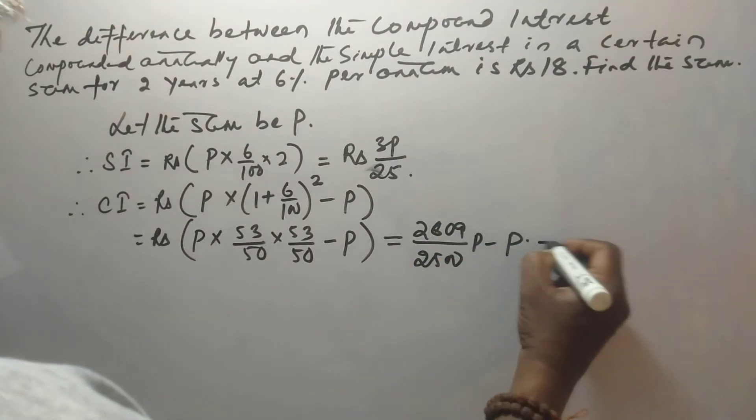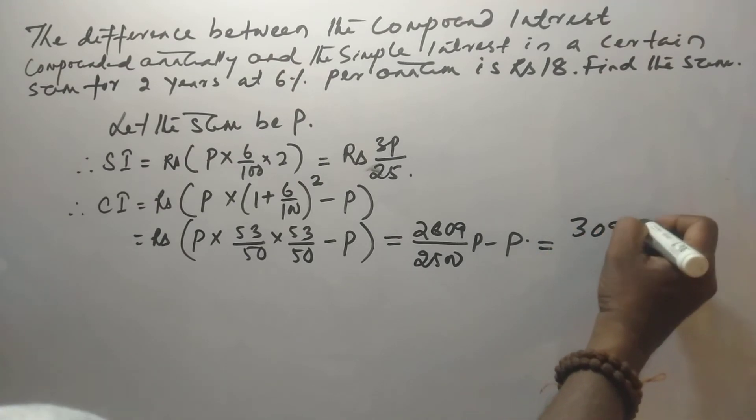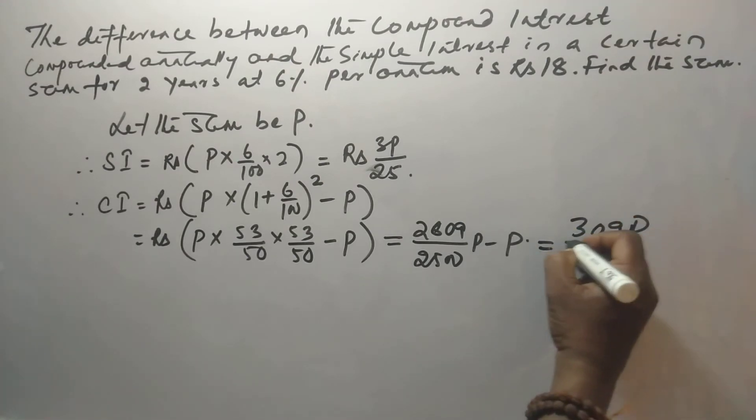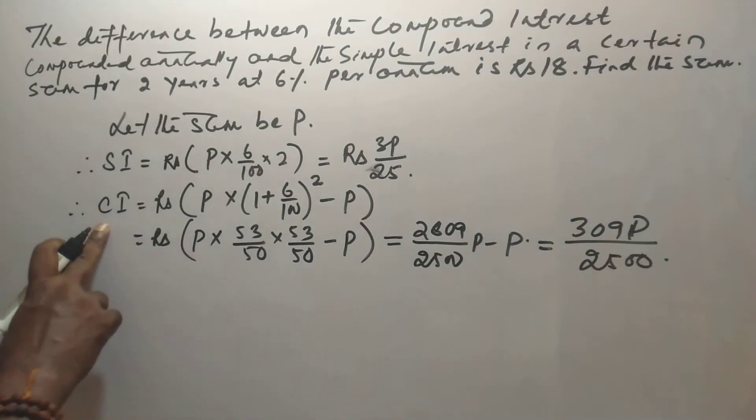Finally, it is 309P divided by 2500, the compound interest.